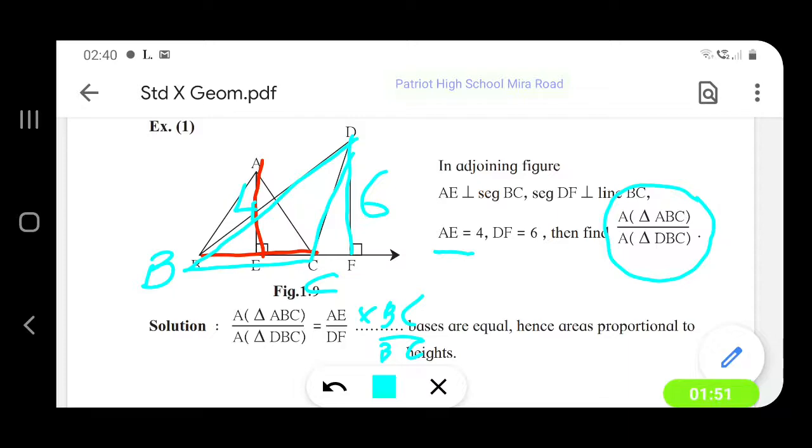But BC we need not write, we can directly write the ratio of the height of the two triangles because the base is the common.